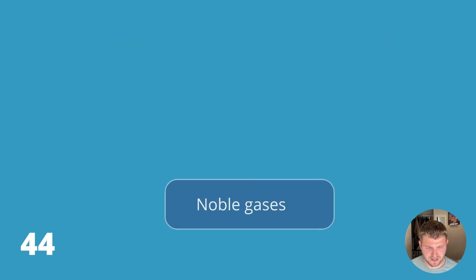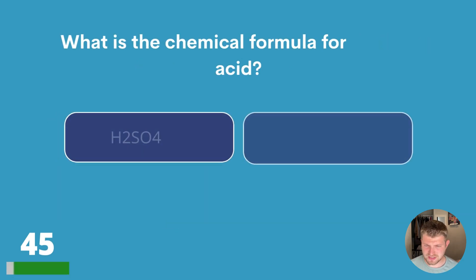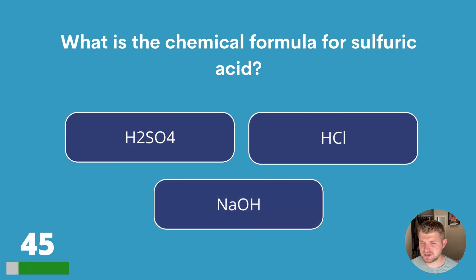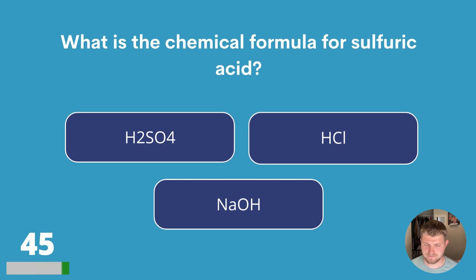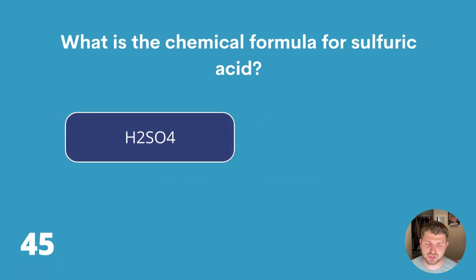Question forty-five. What is the chemical formula for sulphuric acid? H2SO4, HCl or NaOH? The answer is H2SO4.